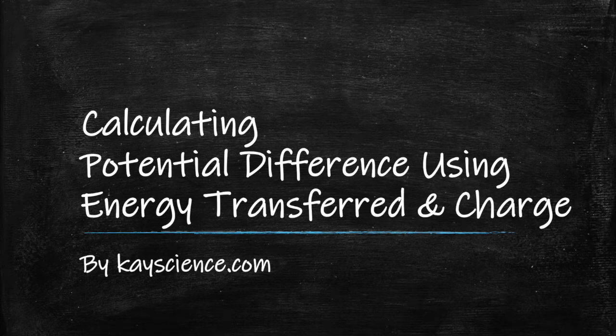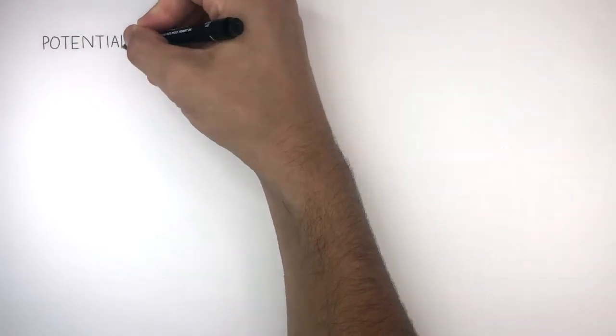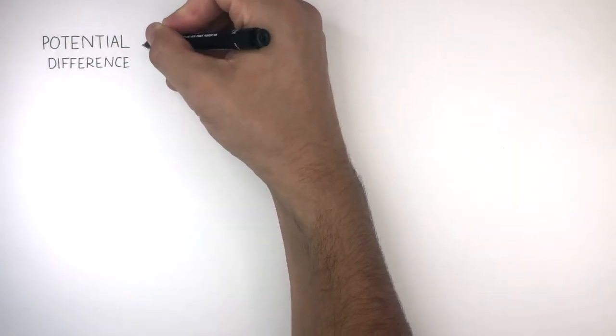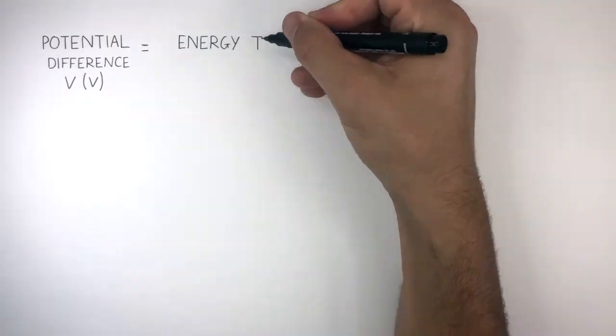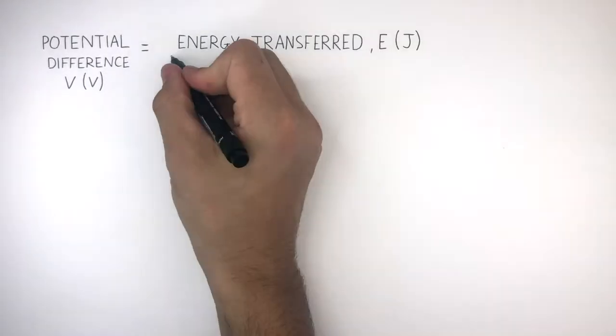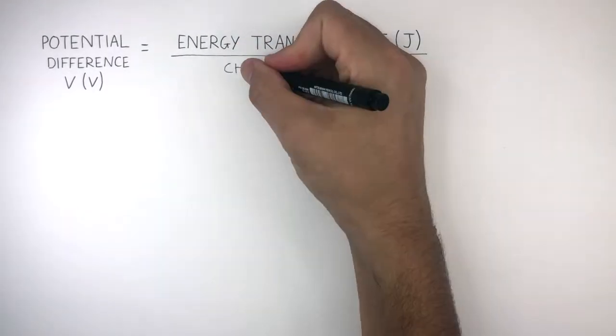Calculating Potential Difference Using Energy Transferred and Charge by kscience.com. The equation to calculate potential difference is: potential difference equals energy transferred divided by charge.